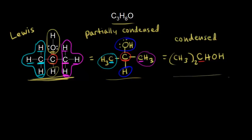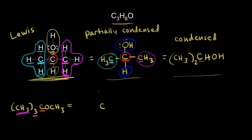Now let's start with a condensed structure and go all the way to a Lewis structure. We'll start with condensed, go to partially condensed, then to a full Lewis structure for more practice. The condensed structure is (CH3)3COCH3. To turn that into a partially condensed structure, we start with the carbon in red. That carbon has three CH3 groups directly bonded to it, so we draw in three CH3 groups.